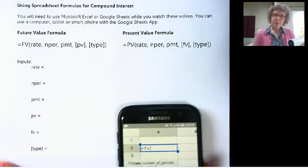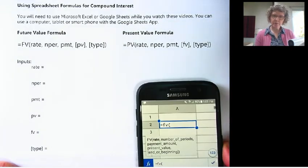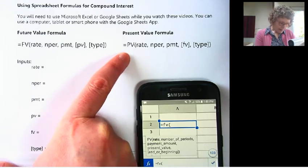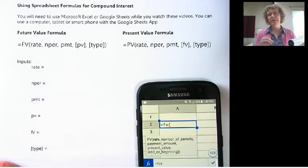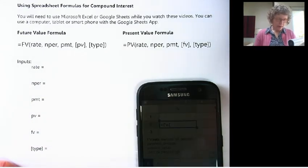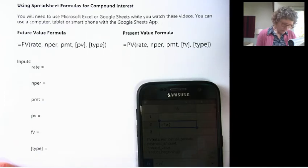The other formula is the present value formula. So that is a formula that says, I want to know how much I need to put in now to get something later. So present value is what you need to put in now. Future value is what you get out in the future. Make sense?